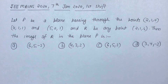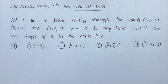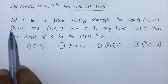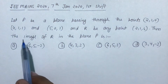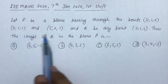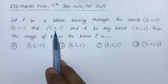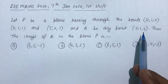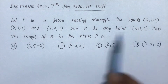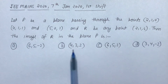Hello dear students. Let's see a problem of JEE Mains 2020, 7th January 2020, first shift. The problem says: let P be a plane passing through the points (2,1,0), (4,1,1), and (5,0,1), and R be any point (2,1,6). Then the image of R in the plane P is?